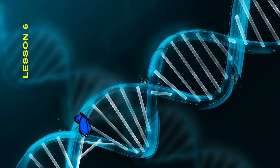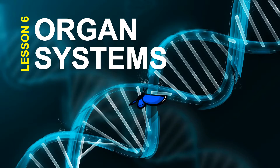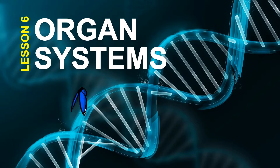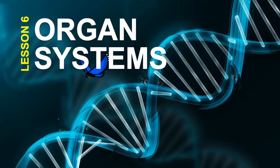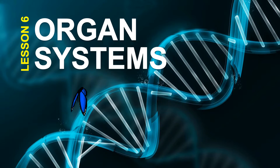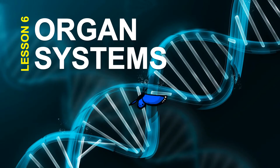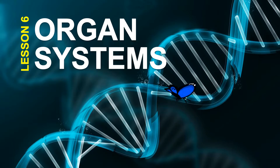Seniors, our Lesson 6 is on Organ Systems. This lesson will discuss the unique characteristics of the different organ systems of some animals. It will also give impressions on how some animals from varied habitats differ in their ways of exchanging gases between their body and the environment. It will further illustrate the different digestive systems of some animals and explain why some animals can digest food more easily than others.